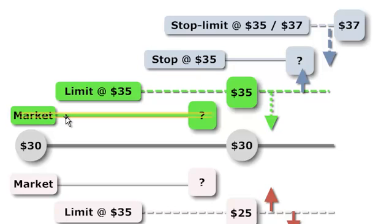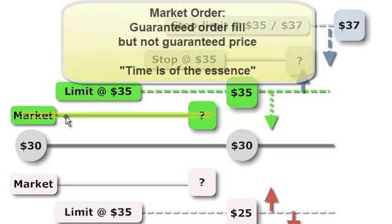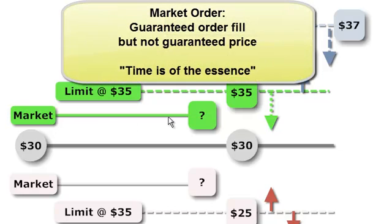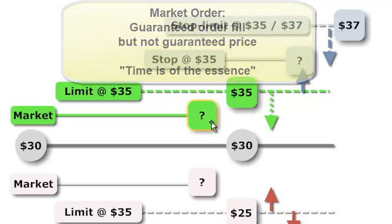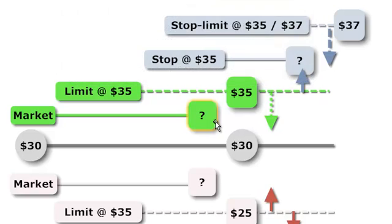The market order wants to fill at the best possible price. The solid line that I drew here indicates we are guaranteed that that order will get filled. So here, current price is $30, we execute the market order, then we are going to buy, but we're not quite sure what the price will be. We might end up paying $30.10, $30.20, maybe $31.